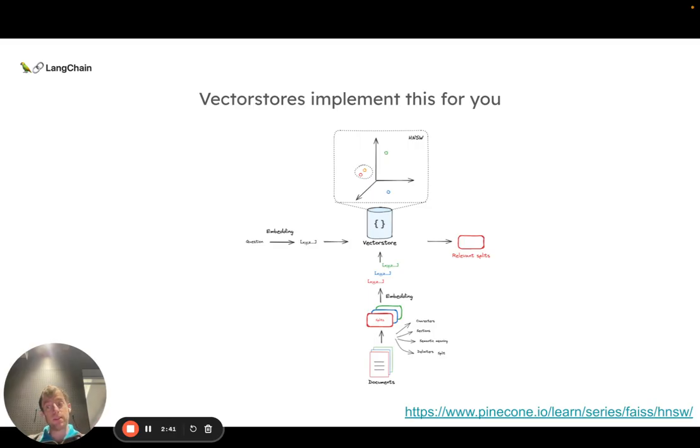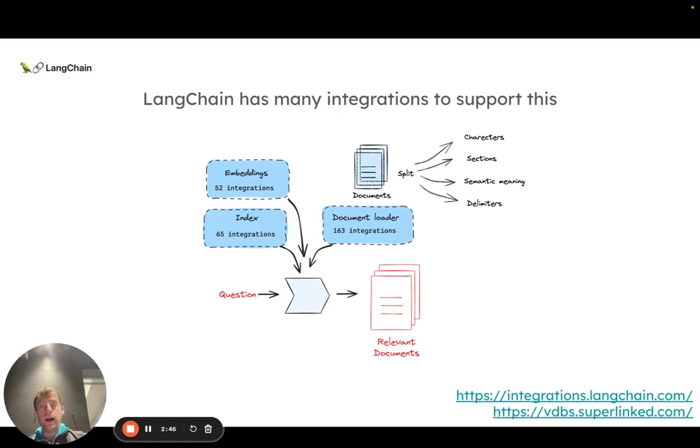And there's a lot of really interesting methods that implement this very effectively. I link one here. And we have a lot of really nice integrations to play with this general idea. So many different embedding models, many different indexes, lots of document loaders, and lots of splitters that can be kind of recombined to test different ways of doing this kind of indexing or retrieval.